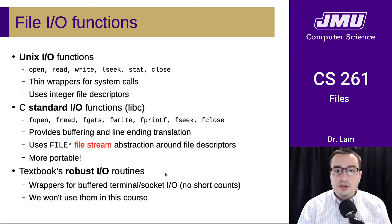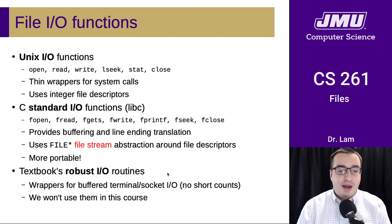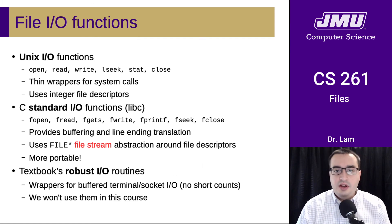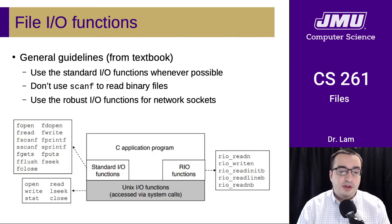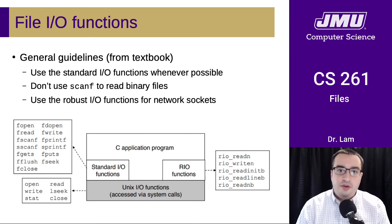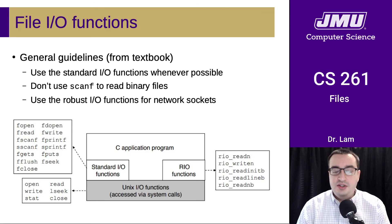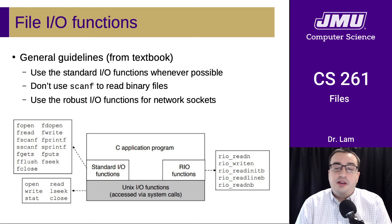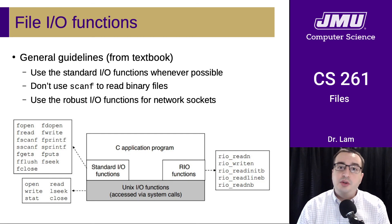The textbook also includes routines it calls robust IO routines, which have even more levels of wrappers for buffered terminal and socket IO. We're not going to use these in this course, but if you're interested you can look at that in the textbook. The general guidelines from the textbook are: use the standard IO functions whenever possible, don't use scanf to read binary files since it's intended for text files, and if you're doing network socket code you should probably use something more robust — but we're not doing that in this course.